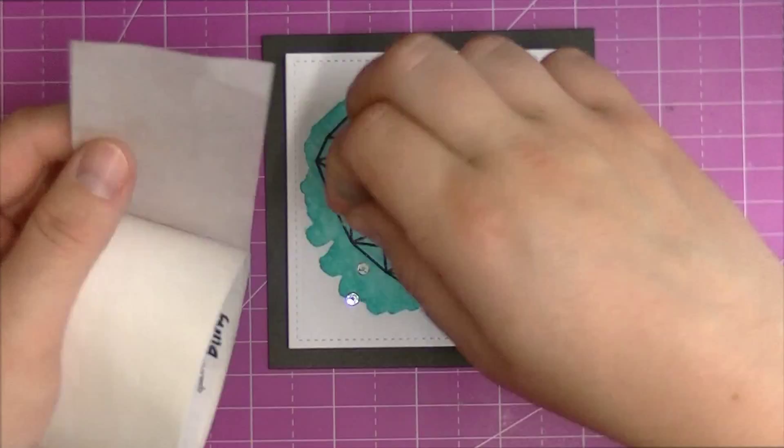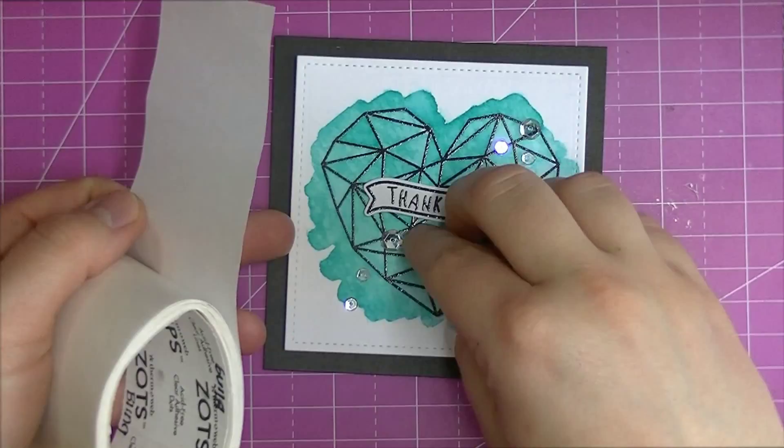To finish off my card I put a scattering of Pretty Pink Posh Sparkling Clear Sequins in the 4mm and 6mm sizes across the card.